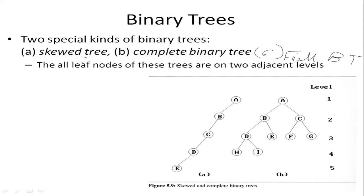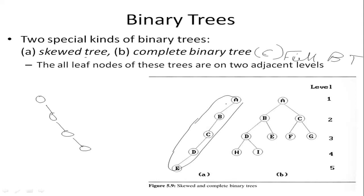A skewed binary tree is a tree which is skewed to the left or to the right. It has only left children or only right children. Skewed trees can be further classified into two categories: left skewed tree and right skewed tree. If a tree consists of only left sub-trees, it is a left skewed tree. If a tree has only right sub-trees, it is called a right skewed binary tree.